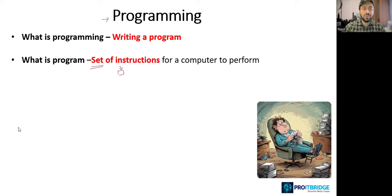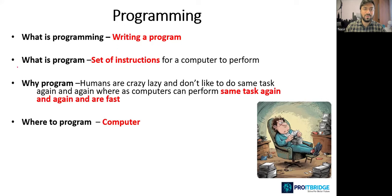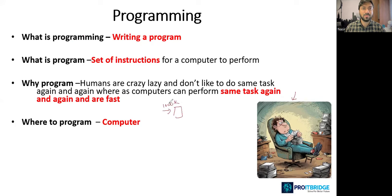Why do we need programs? Humans by nature are very lazy — we do not like to do the same task again and again. This is where computers are very helpful. If I ask a computer to do the same task a thousand times, a million times, it won't say no. It keeps executing the same set of instructions. So writing a set of instructions for a computer is nothing but programming.